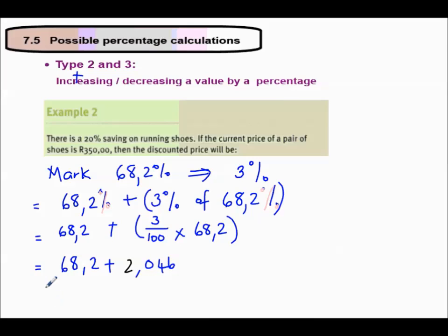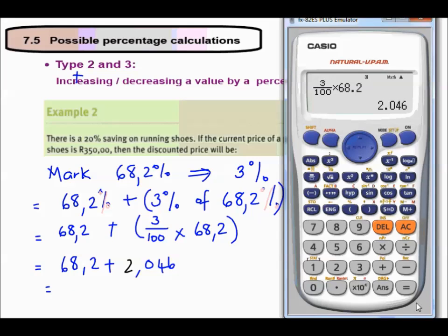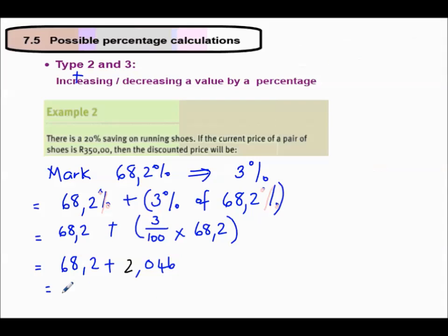We're going to have 68.2 plus 3 out of 100 multiplied by 68.2 equals 2.046. If I add those together, I'm going to add 68.2 and my answer will be 70.246. So I'm going to round it off. I'm looking at getting a 70.